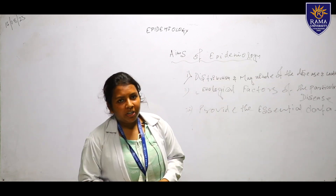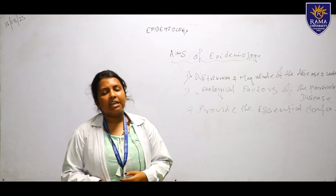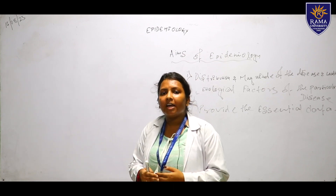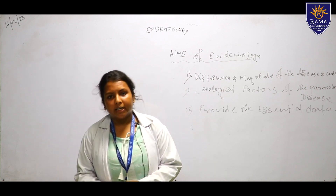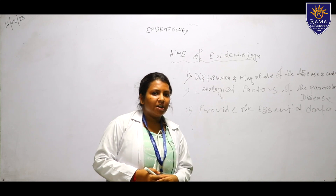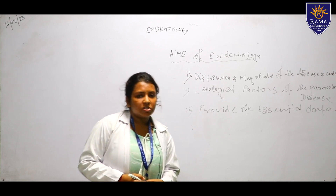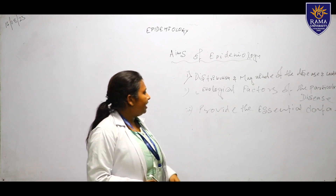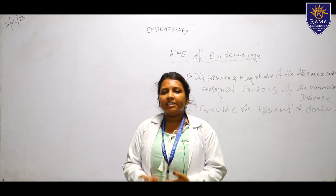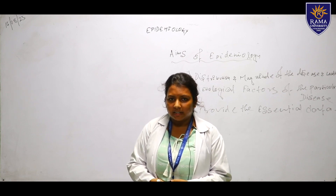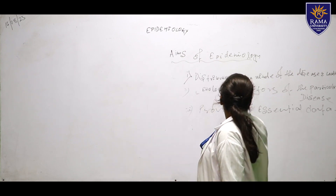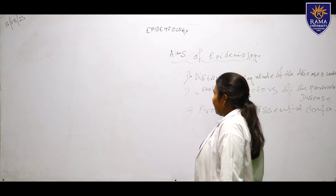Distribution and magnitude tells us how the disease is progressing, how it distributes, where it started, where it spread, and what the growth of the disease is. Etiological factors tell us the reasons why the disease is occurring and what the risk factors are.